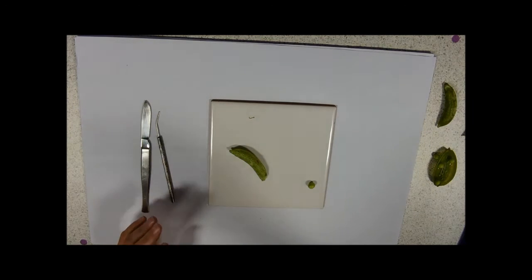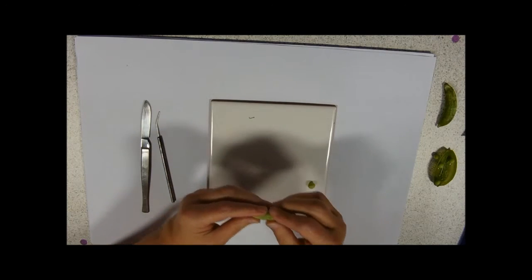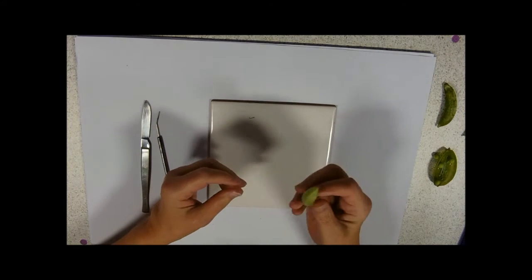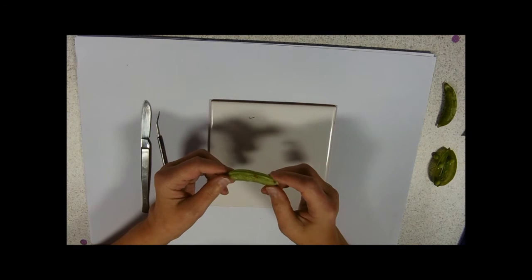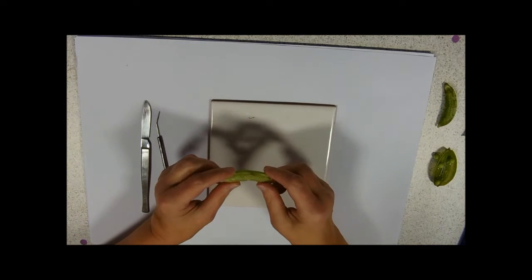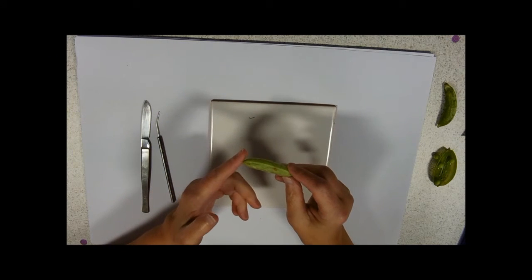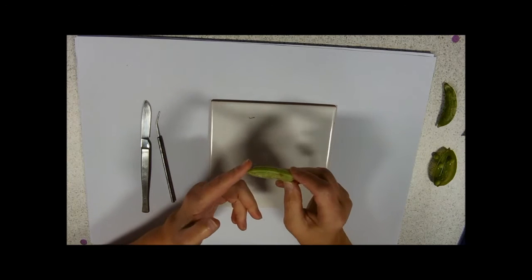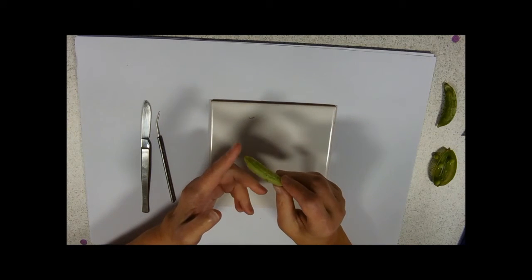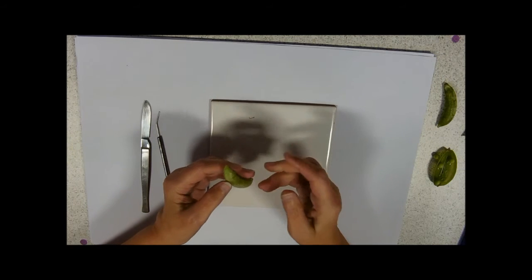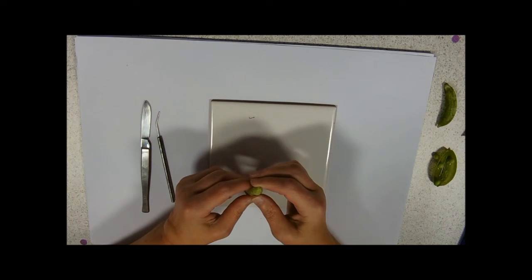The ovary becomes the fruit. Here we see a sugar snap pea, because I couldn't get any broad beans. This outer pod bit, what we would call a pod, is the ovary. After fertilisation the ovary becomes the fruit. So this is the fruit of a sugar snap pea.